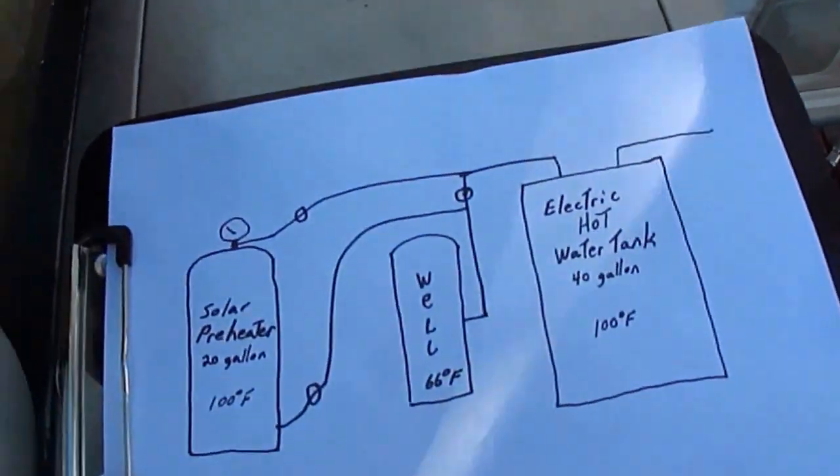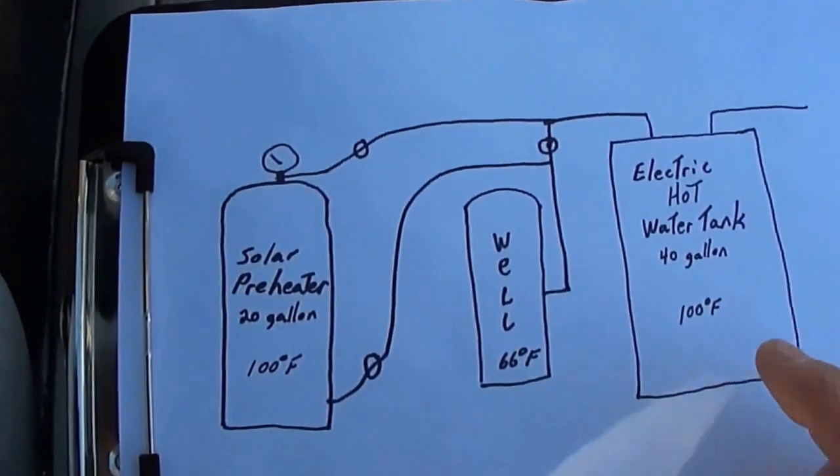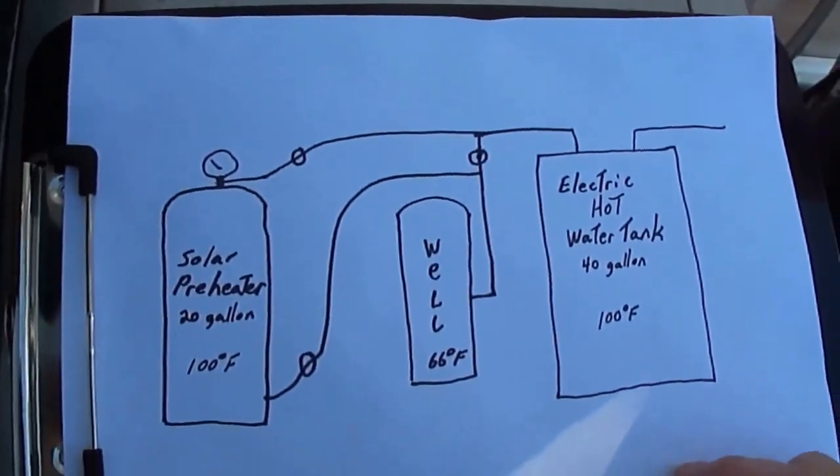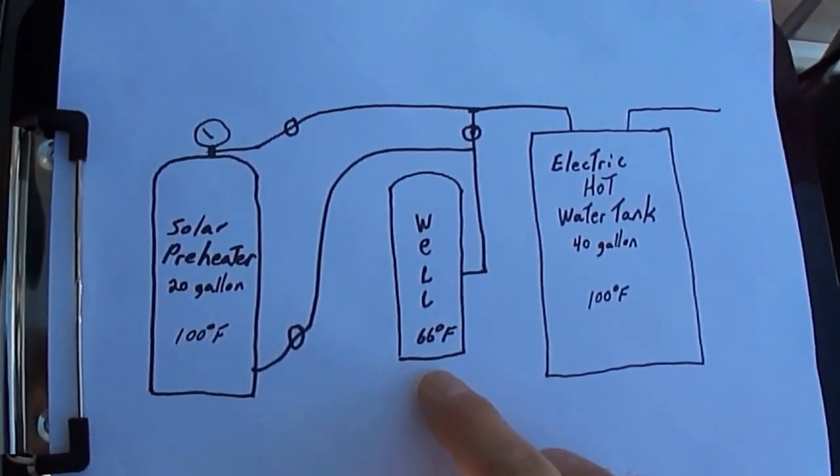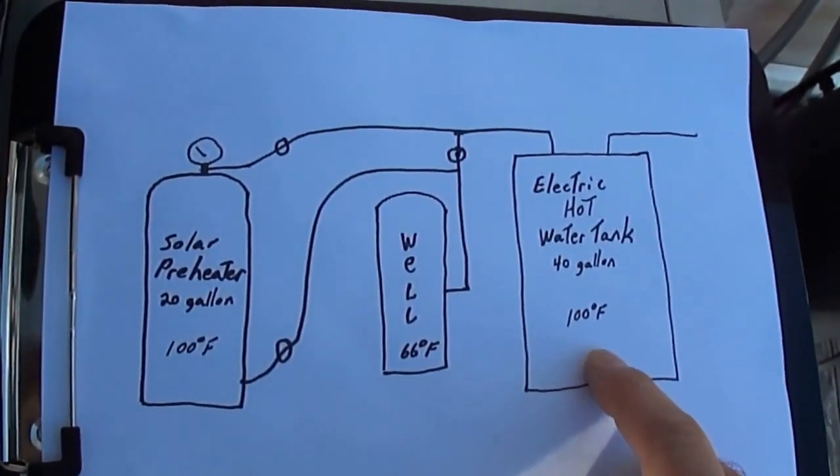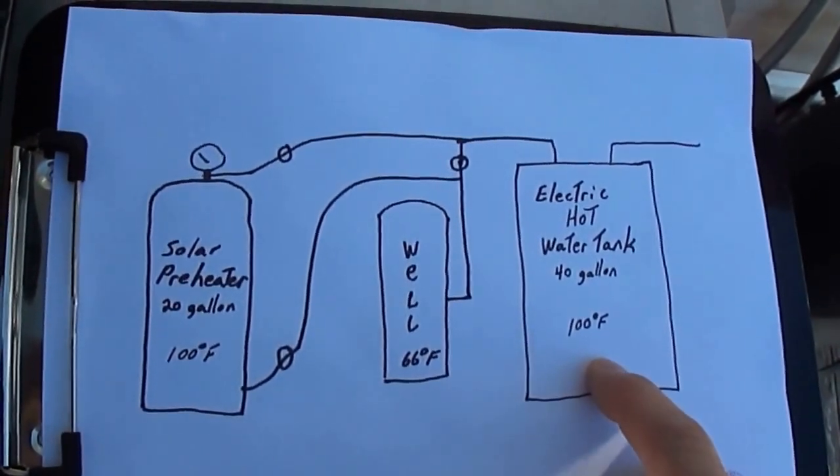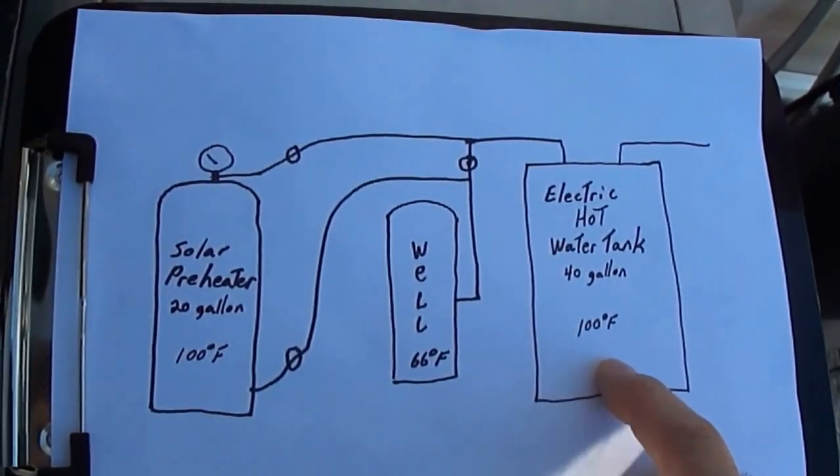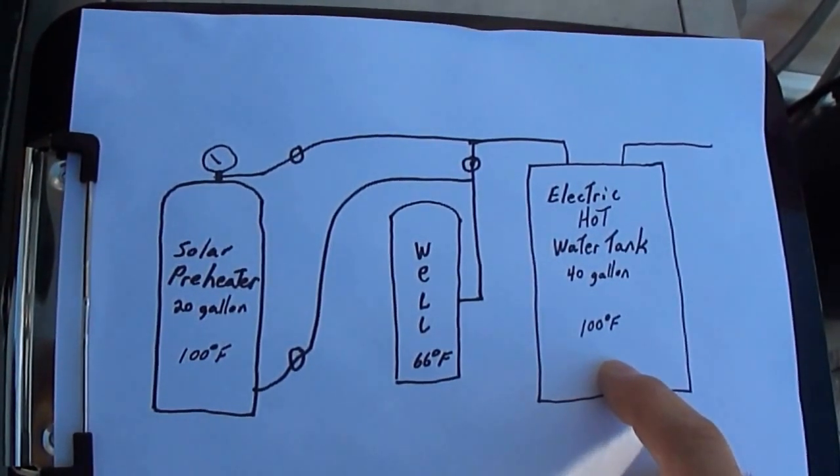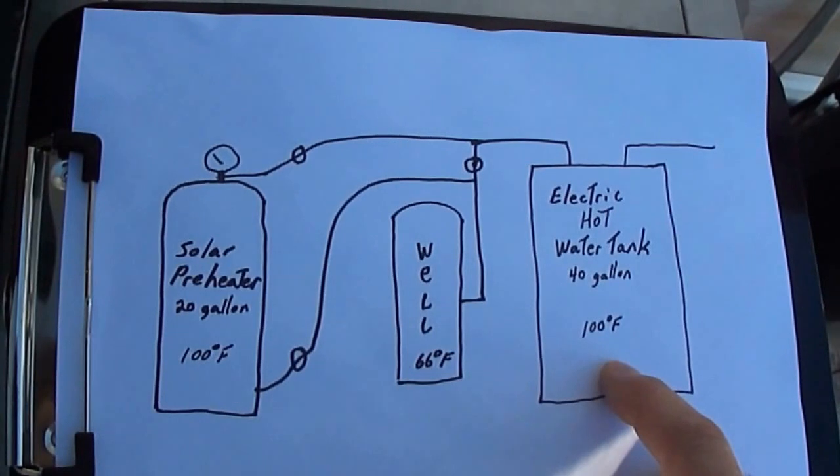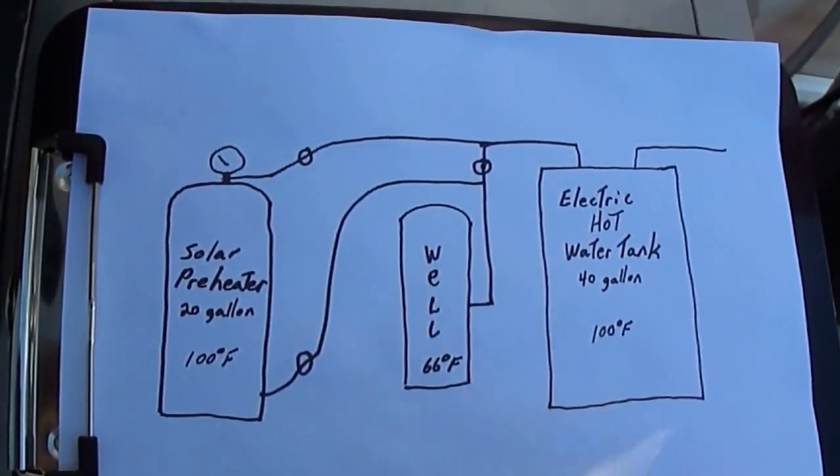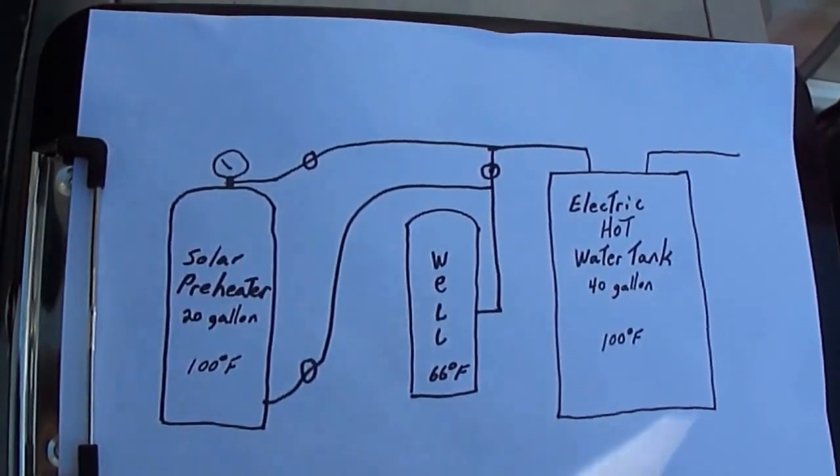What I have here is a 40-gallon electric hot water heater. My well water is 66 degrees and I lowered my electric hot water tank down to 100. That's because it didn't make sense to me adding cold water to be able to use hot water for taking a shower. The only thing I need real hot water for is my dishwasher, but that has its own preheater.